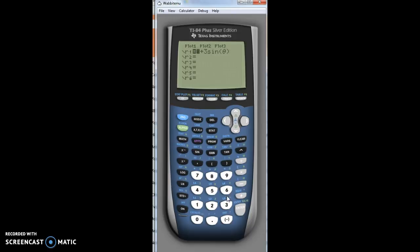The last one I want to show you for the limaçon is what happens when both numbers are the same value. This is called a cardioid.